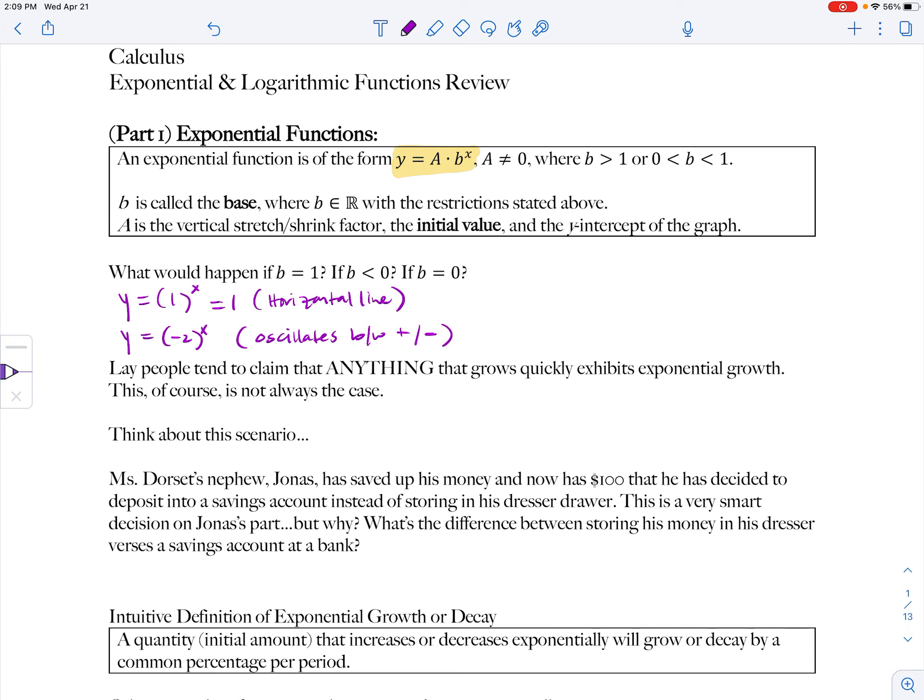And then if the base were equal to zero, zero to the x power, well, if x were negative, if you were to plug any negative value in for x, it would be undefined because that would be moving the zero to the denominator. So we can actually make kind of a piecewise function here where the function would be undefined if x is less than or equal to zero, because zero to the zeroth power is also undefined. And it would just be zero. Y would be equal to zero if x were strictly greater than zero. So it would be a horizontal line when x is strictly greater than zero. So we have those restrictions. The base b must be strictly greater than one or between zero and one.